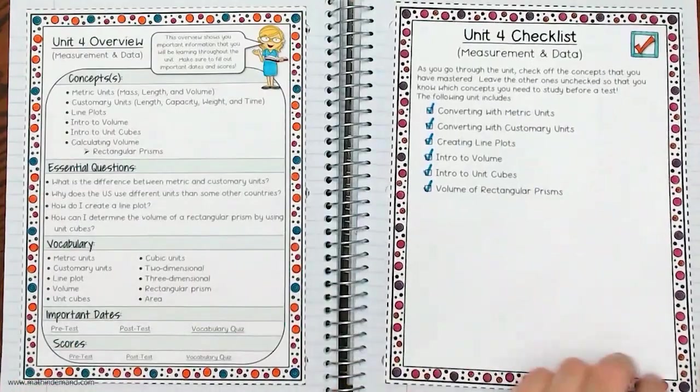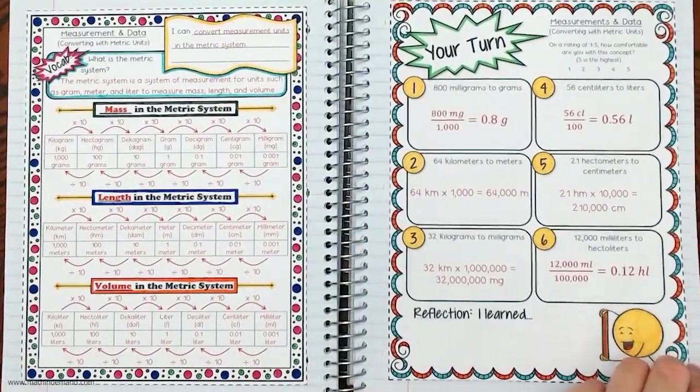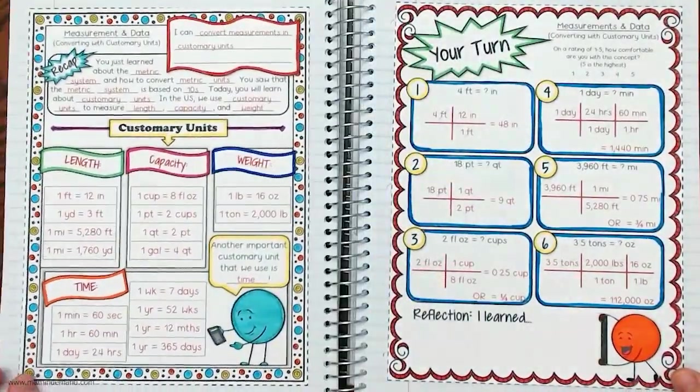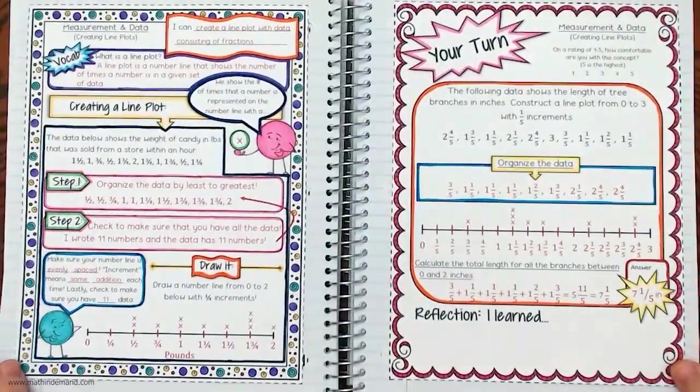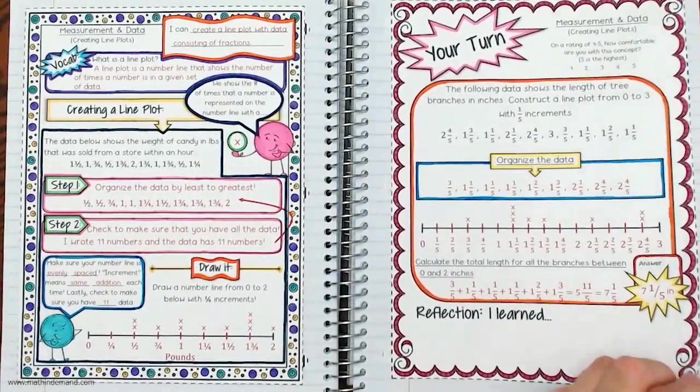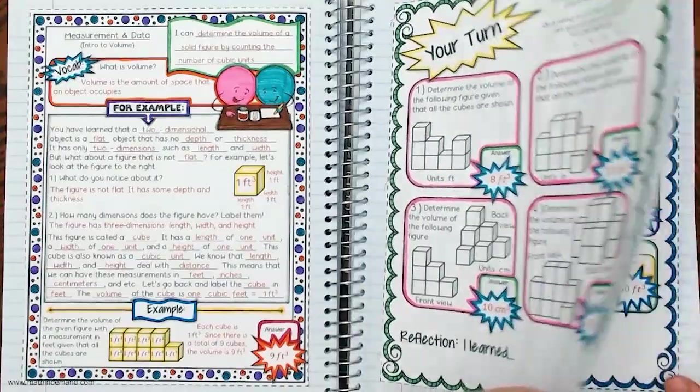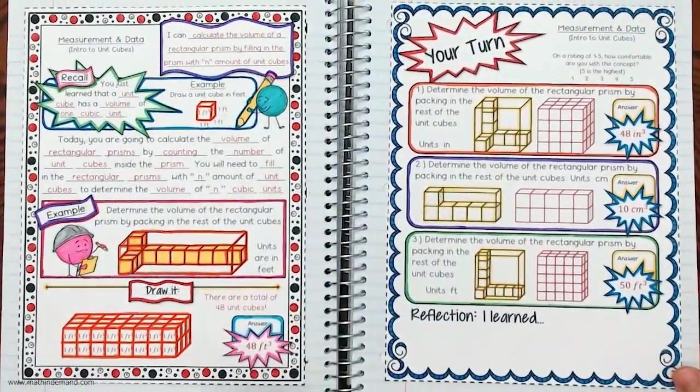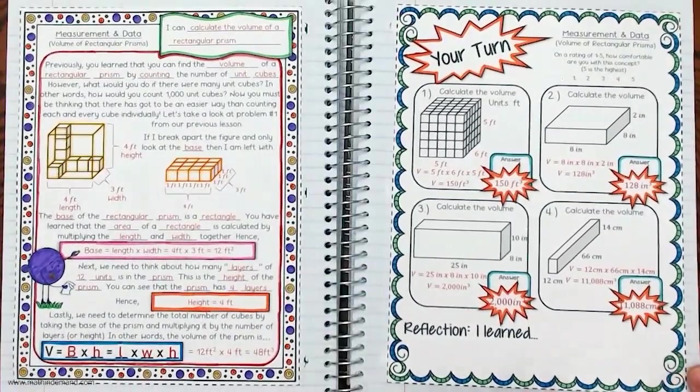Unit four is on measurement and data. Students will be converting with metric units, converting with customary units, creating line plots, an introduction to volume, an introduction to unit cubes, and volume of rectangular prisms.